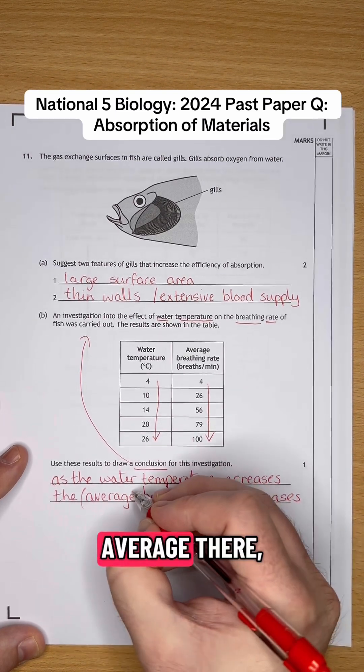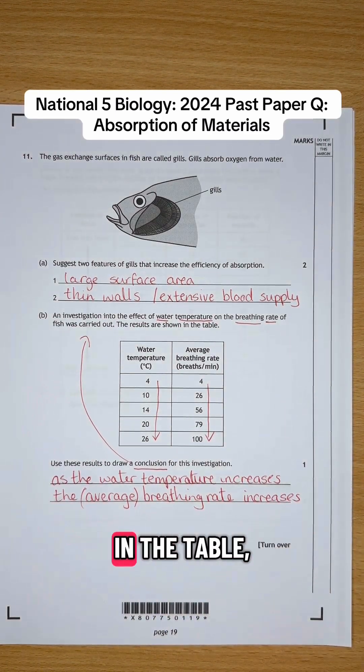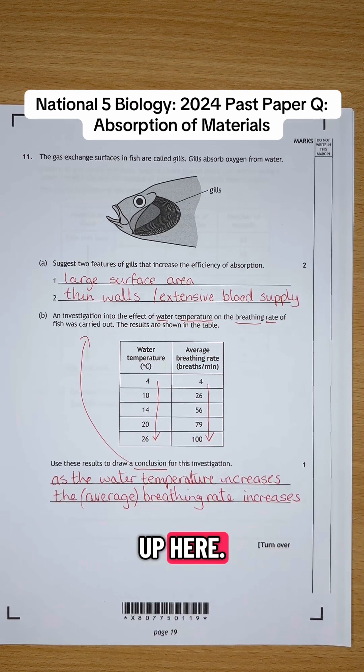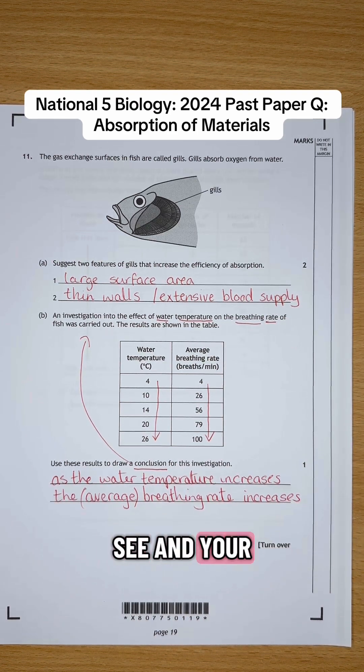You actually don't need probably average there. I've just done that because that's what's on the table. But breathing rate was what was up here. So that's all you have to say in your answer there, okay?